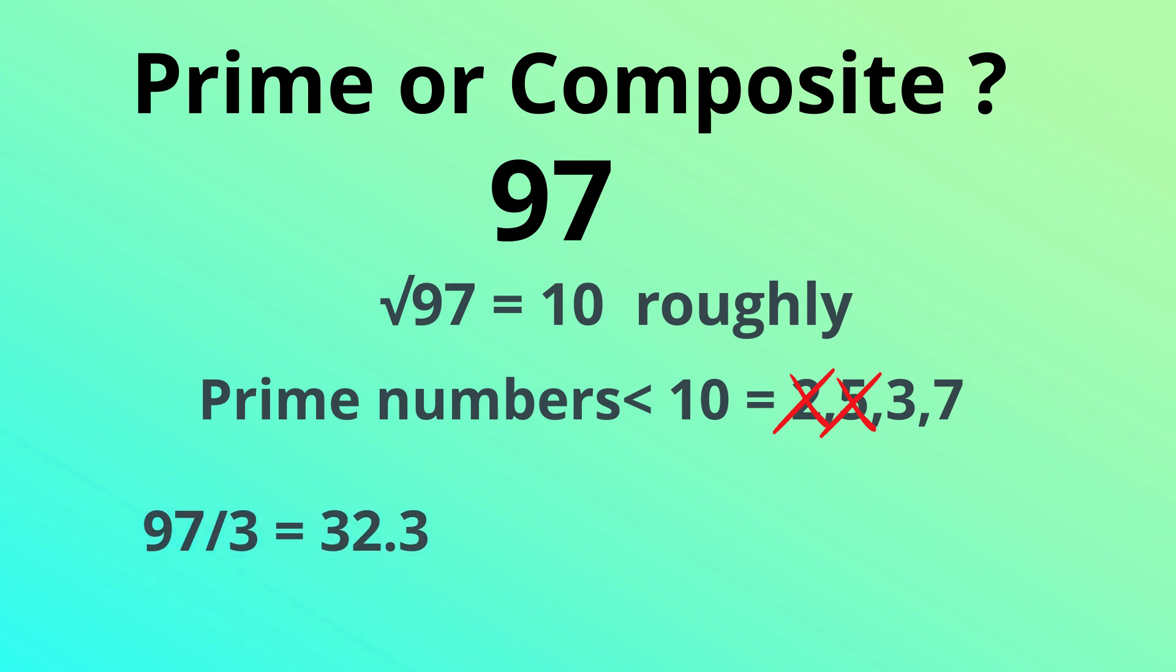So 97 divided by 3 does not go evenly, it is 32.3. And 97 divided by 7 is 13.8. Again, it is not even.